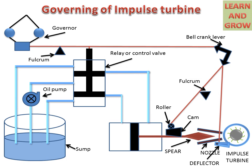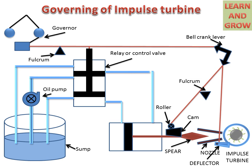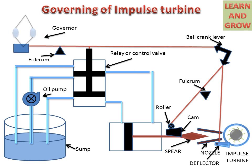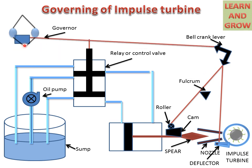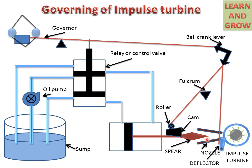Now we see the working of governing of impulse turbine. When the turbine is rotating and its speed increases because the load is less, by the increasing of this speed, the turbine shaft — connected via mechanical linkage to the governor — causes the governor to rotate at higher speed and the sleeve goes upward. This sleeve is connected to the bell crank lever, which deflects the deflector, and the deflector deflects the water coming from the nozzle.